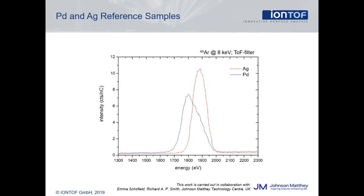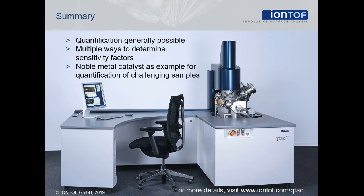Similar to the platinum-gold example, silver-palladium reference peaks of the pure materials can also be measured and distinguished despite the overlapping isotopes. These reference peaks are then used to fit the sample spectra and quantify the amounts of silver and palladium. As we have seen, LEIS is generally a quantitative technique — the signal is directly proportional to the surface concentration. Multiple ways to determine the sensitivity factor for an element are possible, and most straightforward is to use reference materials. This was illustrated using noble metal catalysts, where the mass resolution of the QTAC is required to resolve the two elements, and quantification is performed using reference spectra.